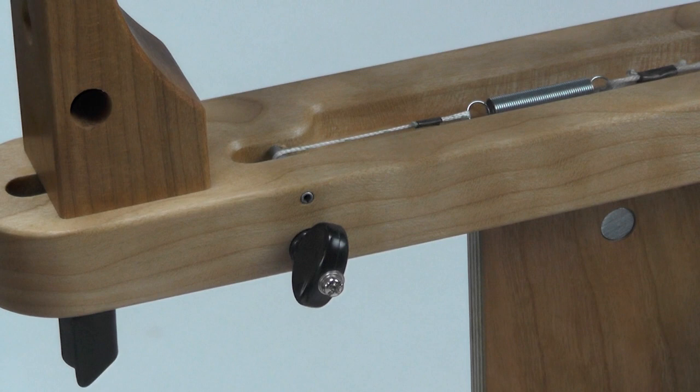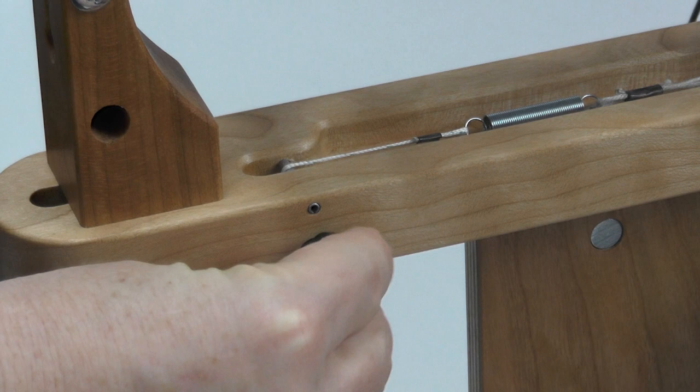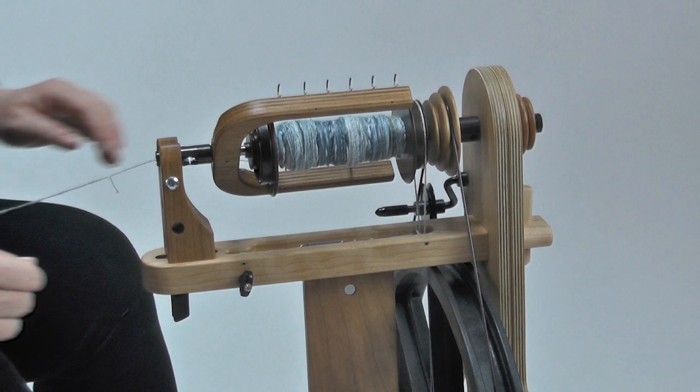Conversely, if the yarn is coming apart between your hands because the fiber is drafting too fast, decrease the scotch tension. If there's still not enough twist in your yarn, move to the smaller groove of the whirl or switch to a smaller whirl.